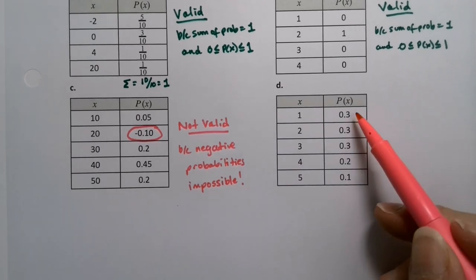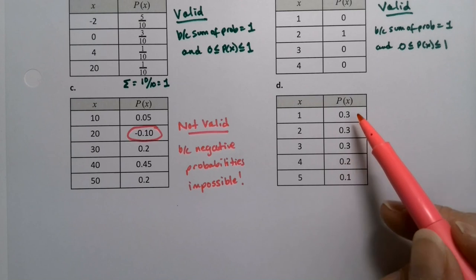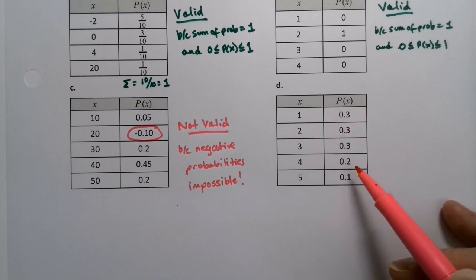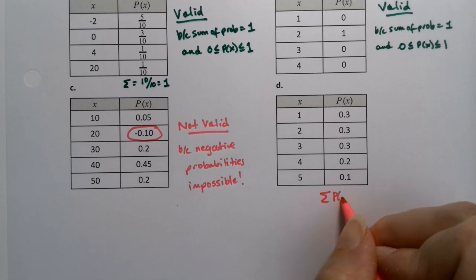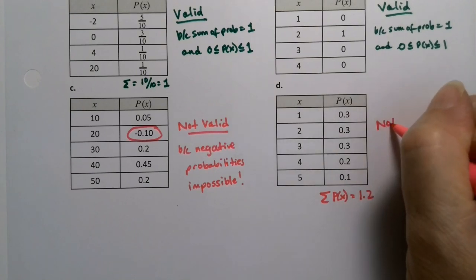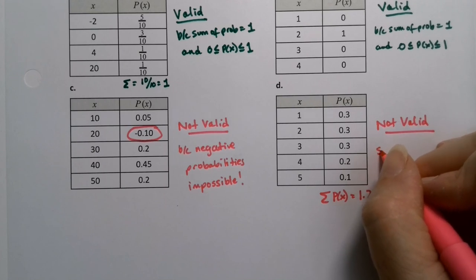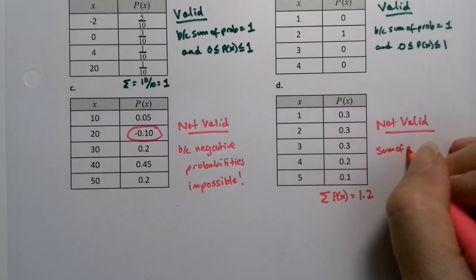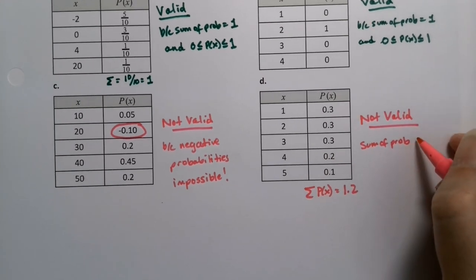Now this one, 0.3, 0.6, 0.9. These three numbers add up to 0.9. This would make it one, this would make it 1.2. So the sum of these probabilities, the sum of P of X, is 1.2. 1.2 is not one, so this is not valid either. The sum of probabilities, or you could write sum of P of X, is 1.2, not one.